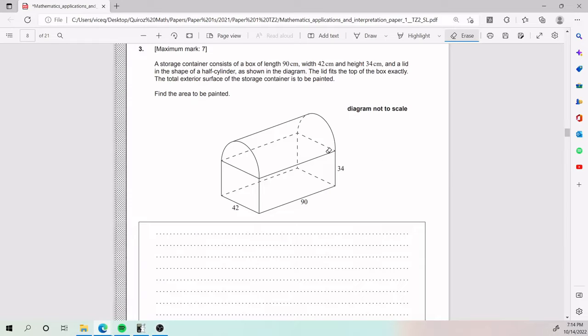Alright, so for number three, we have a storage container consists of a box with length 90 centimeters, width 42 centimeters, and height 34 centimeters. They also tell us that it has a lid in the shape of a half cylinder, as shown in the diagram. The lid fits the top of the box exactly.